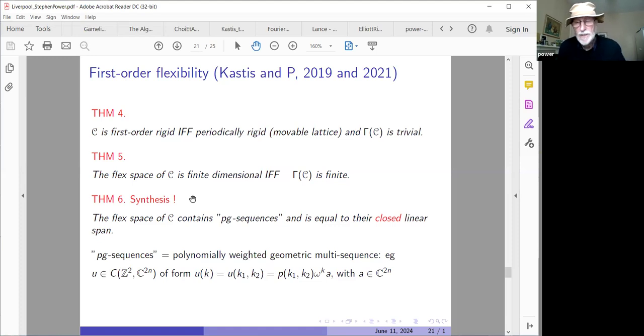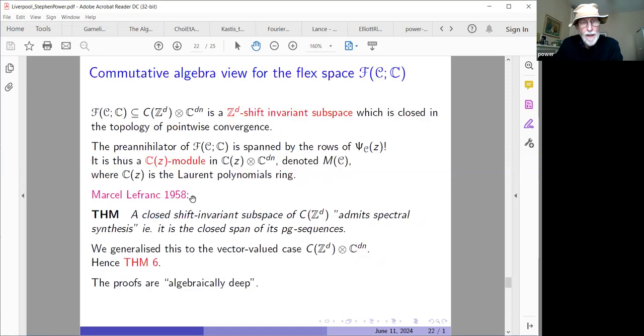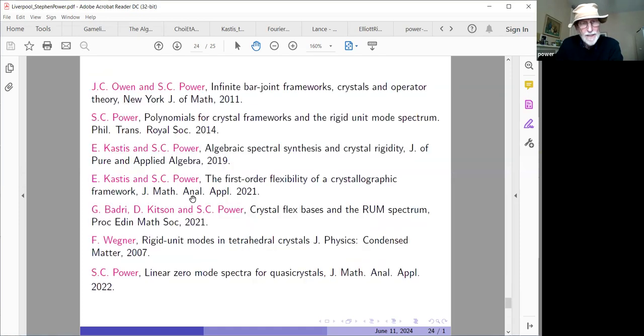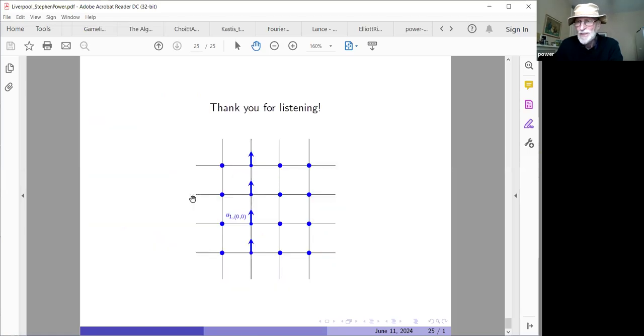And the answer is that C will be first order rigid if and only if it's first of all periodically rigid for the movable lattice, and secondly, that the geometric spectrum is trivial. This also allows us to identify when the flex space is finite dimensional. And there are some interesting examples, kind of alternating squares examples, which are covered by this and kite framework also. Finite dimensional if and only if the geometric spectrum is finite. And it's really the theorem six, which is behind this, and this is quite a deep theorem. It describes how the flex space, which can include these line supported infinitesimal flexes, for example, must contain special flexes, which are a bit like the modes, but somewhat more general. We call them PG sequences, which means short for polynomially weighted geometric multisequence. So it looks like what I'm circling here. There's a velocity of the building block at the base building block. And then we allow polynomial increase as we go out to building blocks further away from the origin. And there's a phase factor here. So this theorem uses some quite deep algebra going back to somebody called Lefranc, Marcel Lefranc. And Lefranc and I managed to generalize his scalar valued theorem to the vector valued case, which is what we needed for these velocity spaces of velocity vectors.